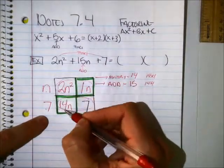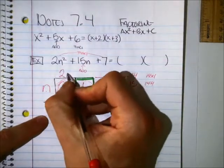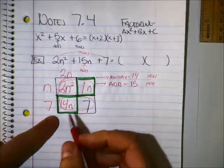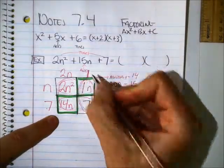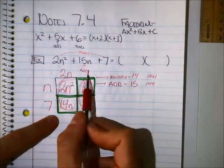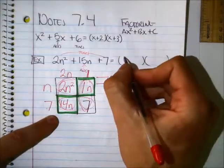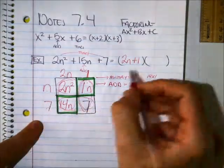Let's go up. 2n squared and 14n. What can I take out of that? A 2 and an n. And here, what can I factor out of 1 and 7? Just 1. Now that I factored, I got my two things. 2n and a 1 and n and a 7.